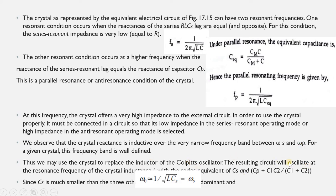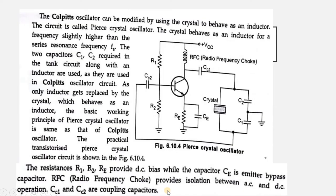The resulting circuit oscillates at the frequency of the crystal, which is equivalent to Cs and Cp plus C1C2/(C1+C2). Since Cs is very much smaller than the other three capacitances, ω₀ = 1/√(L × Cs) = ωs. The next type is the Pierce crystal oscillator.